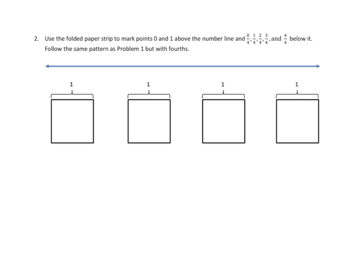So let's take a look at one of our problems. There's only problems on tonight's homework, and I don't know which one your teacher has assigned, but I'm going to do problem number 2 with you. Let's take a look at the directions here, because these are more complicated than our homework directions usually are. Use the folded strip to mark points 0 and 1 above the number line, and 0 fourths, 1 fourth, 2 fourths, and 3 fourths, and 4 fourths below it.